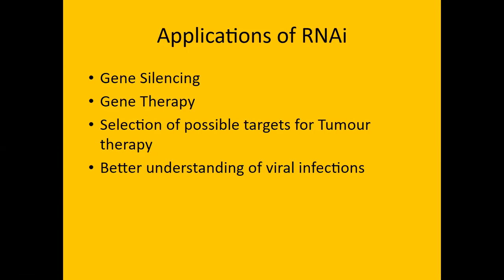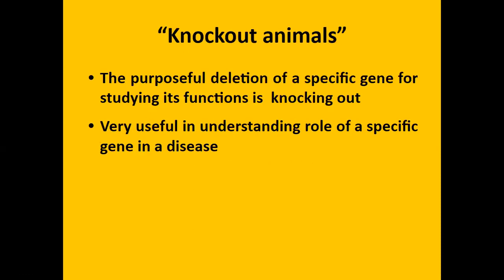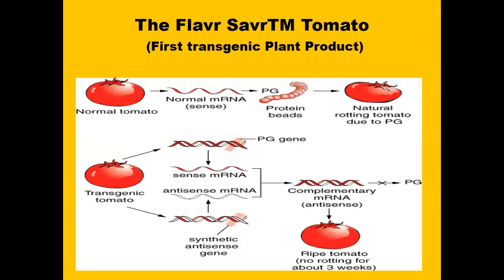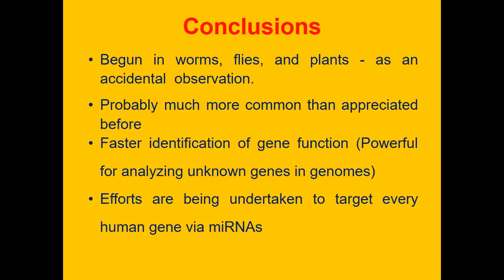Applications of RNA interference include gene silencing, gene therapy, selection of possible targets for tumor therapy, better understanding of viral infection, and knockout animals — the purposeful deletion of a specific gene for studying its functions. Knockout is useful in understanding the role of specific genes in disease. Transgenic tomatoes are also an example of RNAi, achieved by silencing the polygalacturonase enzyme involved in degradation of the cell wall component pectin, resulting in delayed fruit ripening.